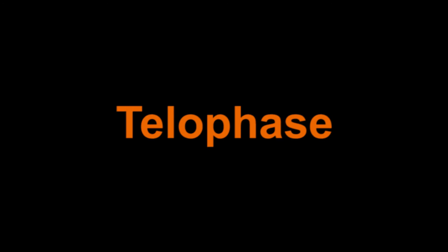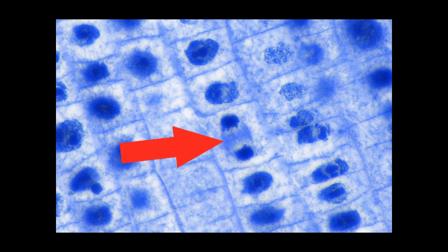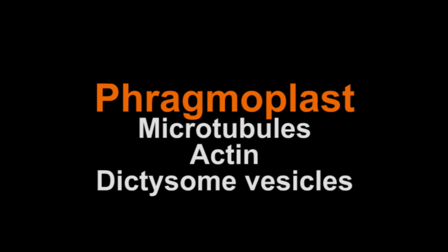Telophase. During telophase, the nuclear envelope reforms around the chromosomes, which uncoil. At the same time, the spindle microtubules depolymerize and disappear. The phragmoplast forms where the metaphase plate was located. It is made of short microtubules parallel to the spindle microtubules and actin filaments.